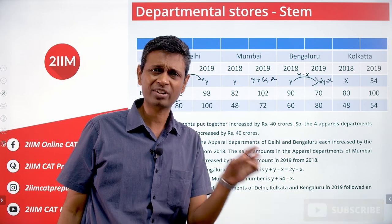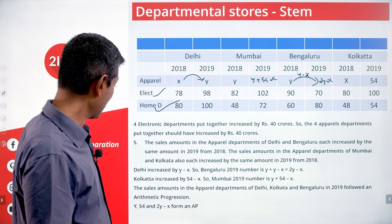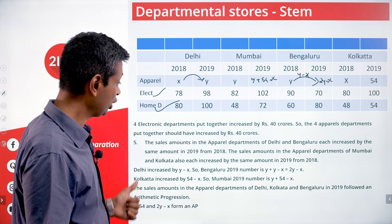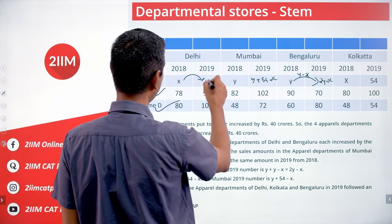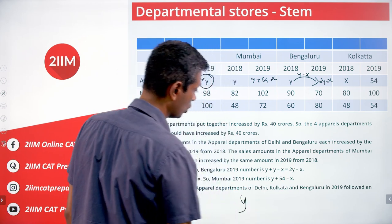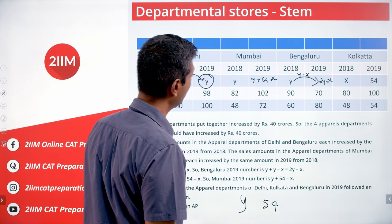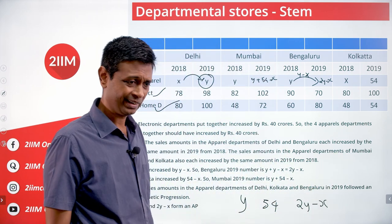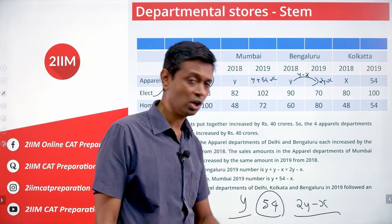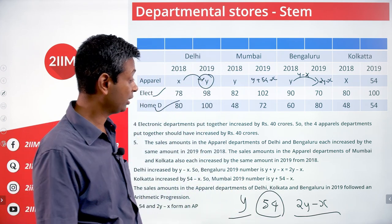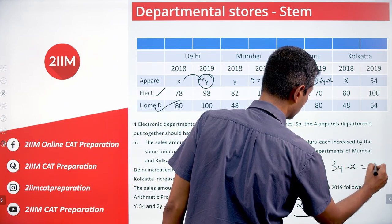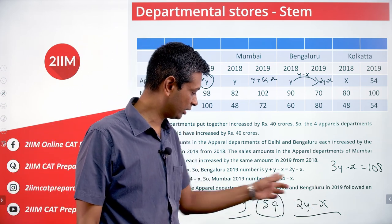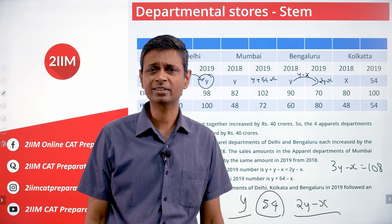The last constraint gives us an actual number. The sales amounts in the apparel departments of Delhi, Kolkata and Bengaluru in 2019 followed an arithmetic progression. Delhi 2019 is y, Kolkata 2019 is 54, Bengaluru 2019 is 2y minus x. For an AP, the two extreme terms add up to twice the middle term: y plus 2y minus x equals 2 times 54, which gives 3y minus x equals 108.